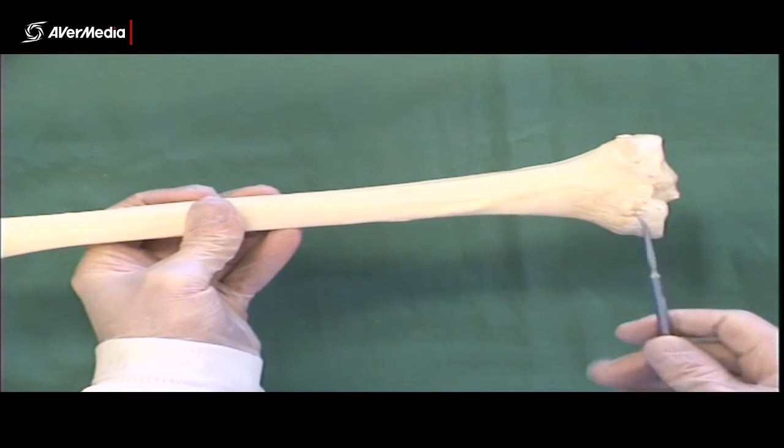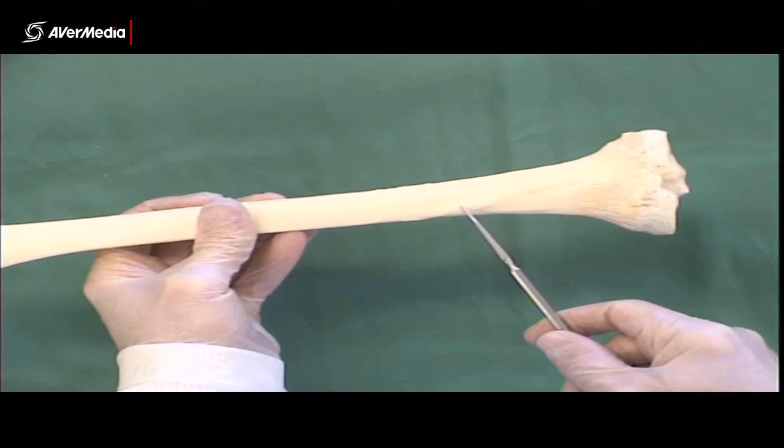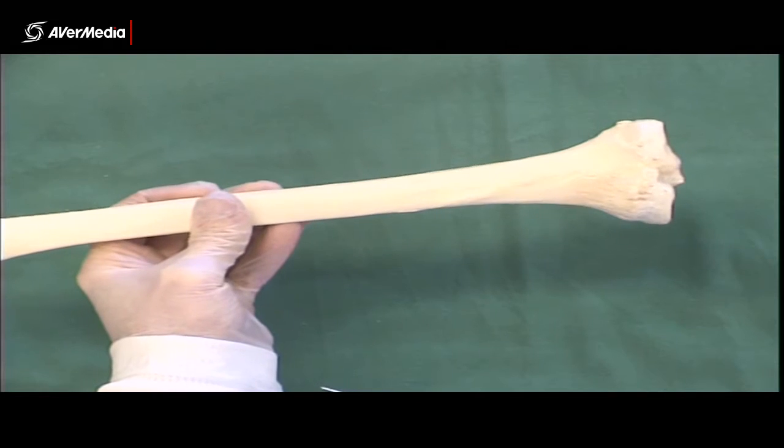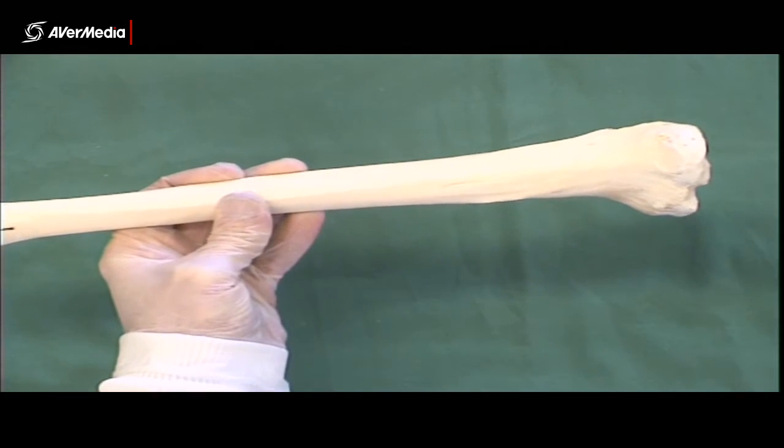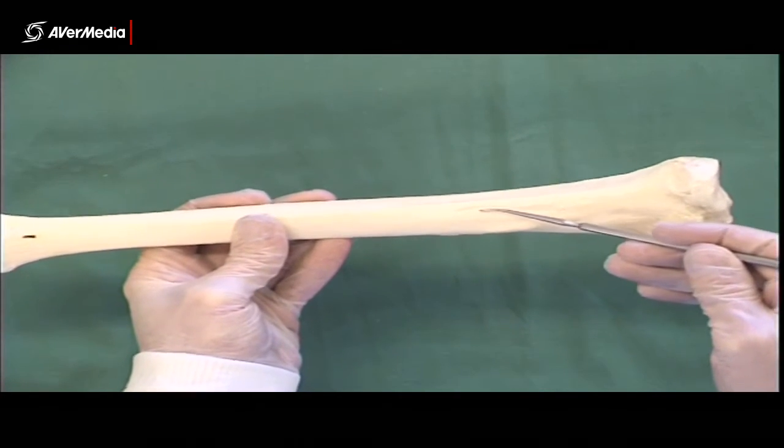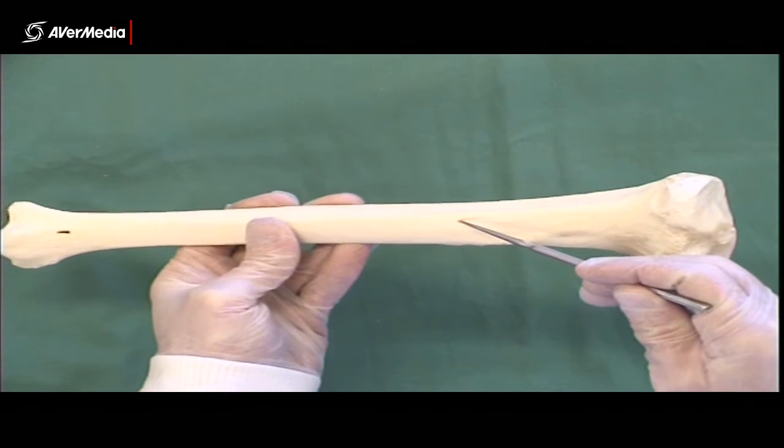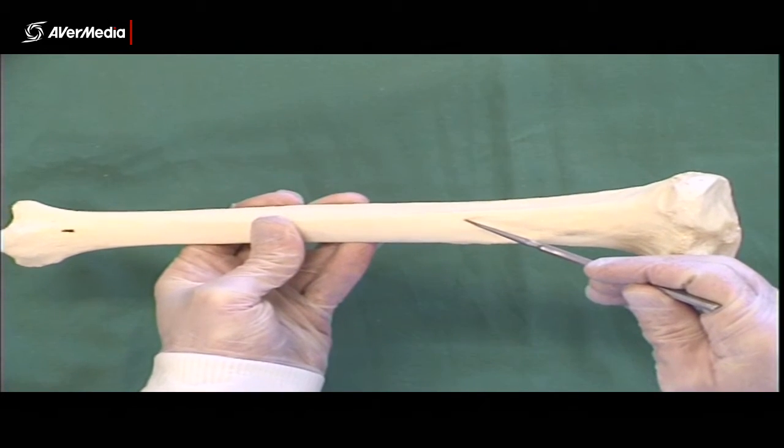Also on the posterior surface, we've got this oblique line, so a line running down here on an angle, and that's the soleal line. And then not far from that, hopefully you can see a little groove just here. At the bottom of that groove, there's actually a foramen, and that's a nutrient foramen.